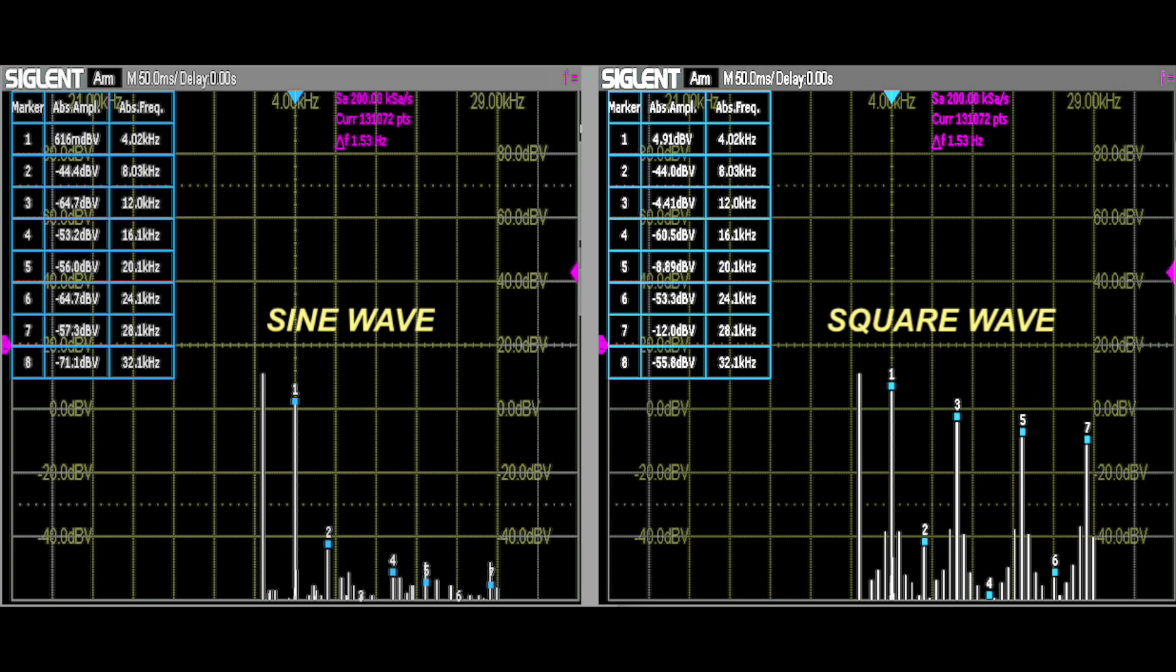Also notice that the harmonic content overall for the sine wave is much smaller. This is because it is closer to a pure sine wave, which theoretically contains only a fundamental frequency.